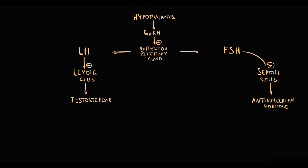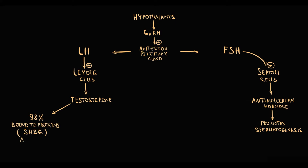Follicle-stimulating hormone acts on Sertoli cells in seminiferous tubules, which in response secrete anti-Müllerian hormone, and anti-Müllerian hormone promotes spermatogenesis. Once testosterone is produced, most testosterone molecules immediately bind to sex hormone binding globulin and albumin, and bound testosterone is inactive.